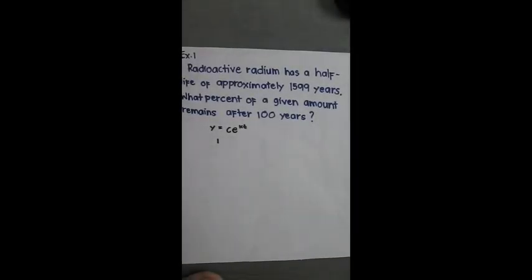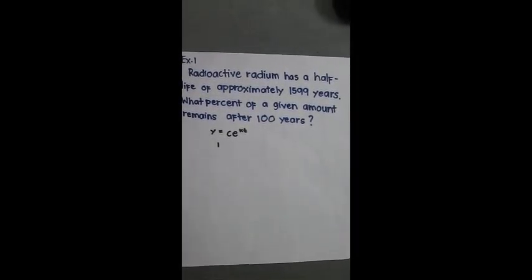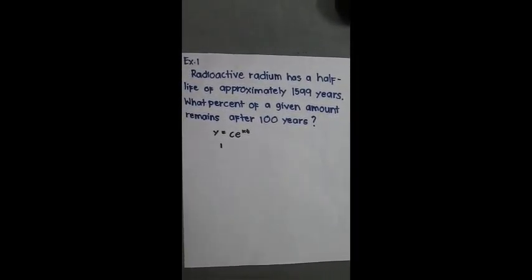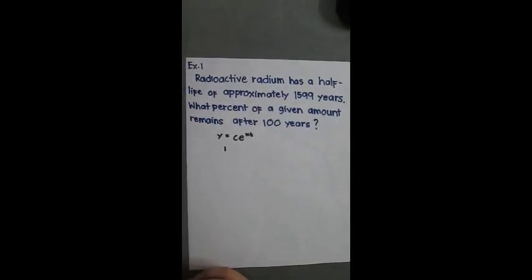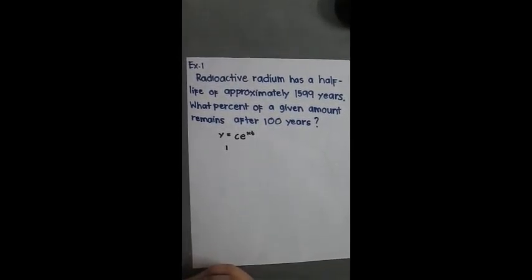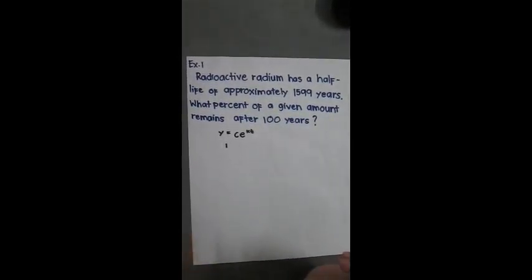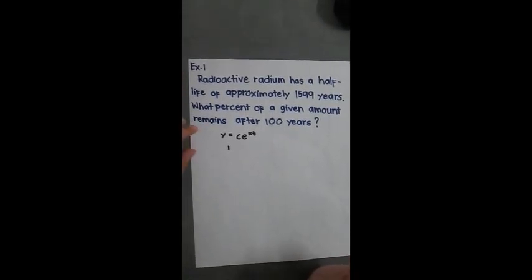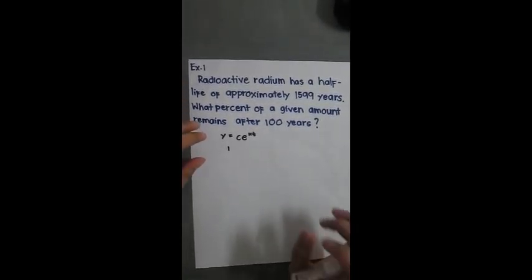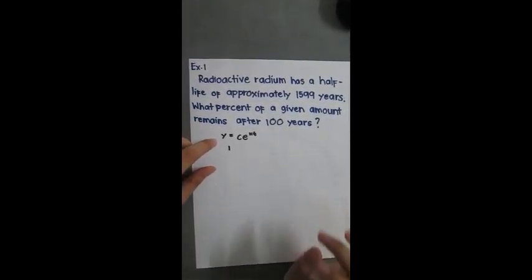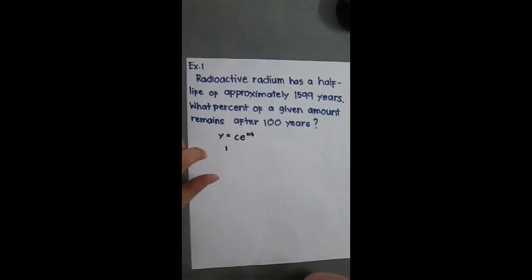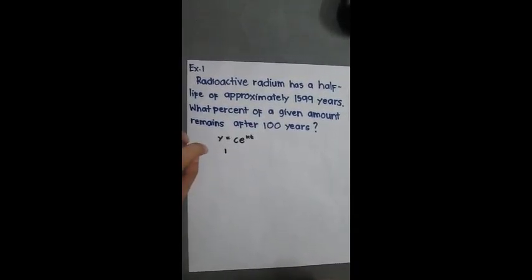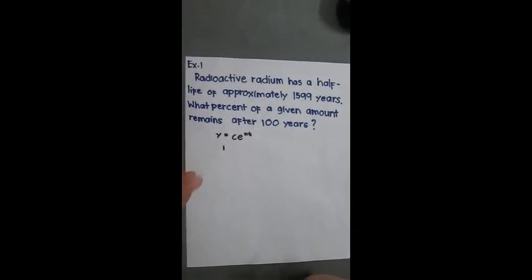Radioactive radium has a half-life of approximately 1,599 years. What percent of a given amount remains after 100 years? In this problem, we will use the formula y equals c times e raised to k times t.